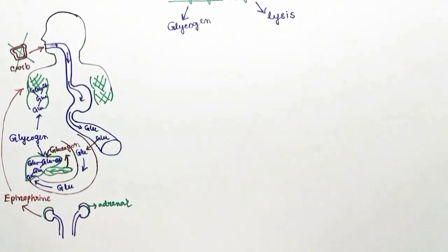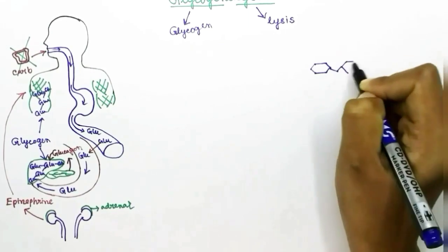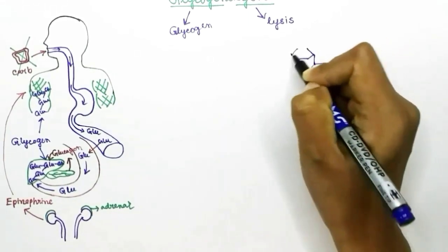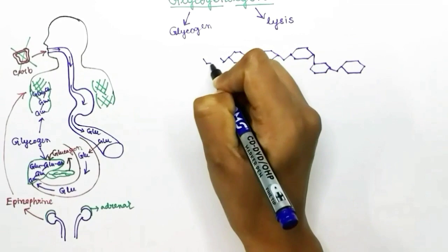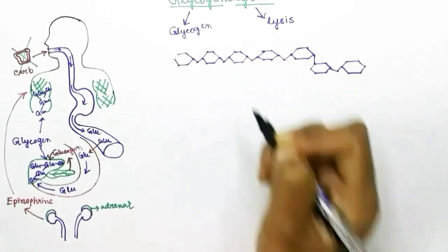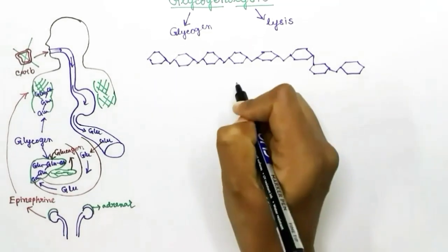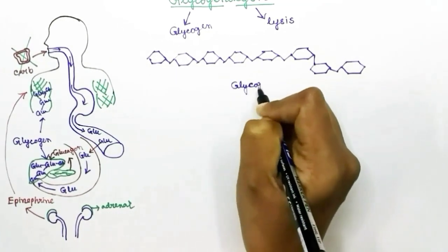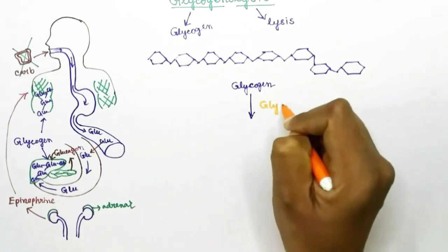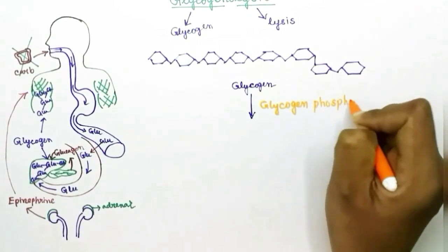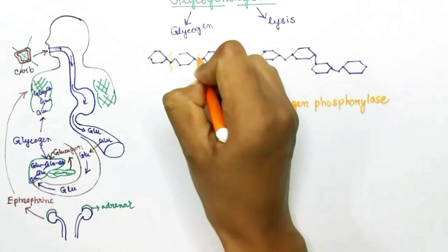Now let's look at the process of glycogenolysis. Glycogen is a polymer of glucose with a branched structure — it has linear chains with 1,4-glycosidic bonds and also branches with 1,6-glycosidic bonds.